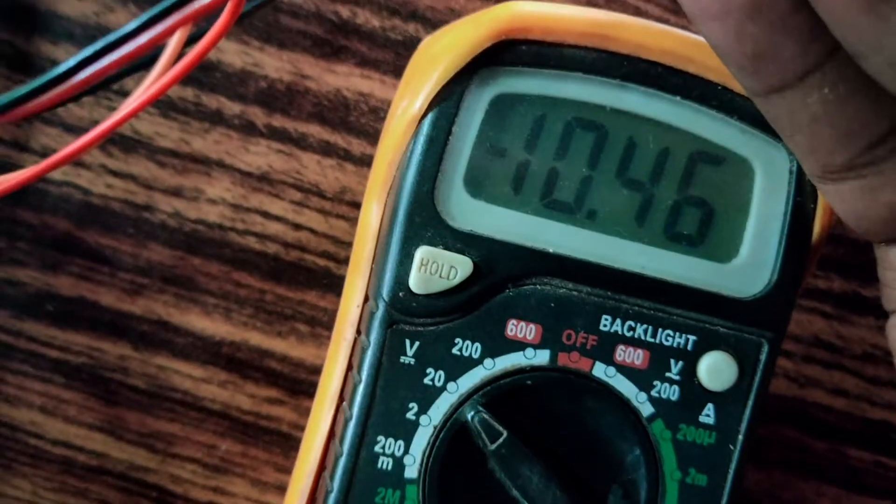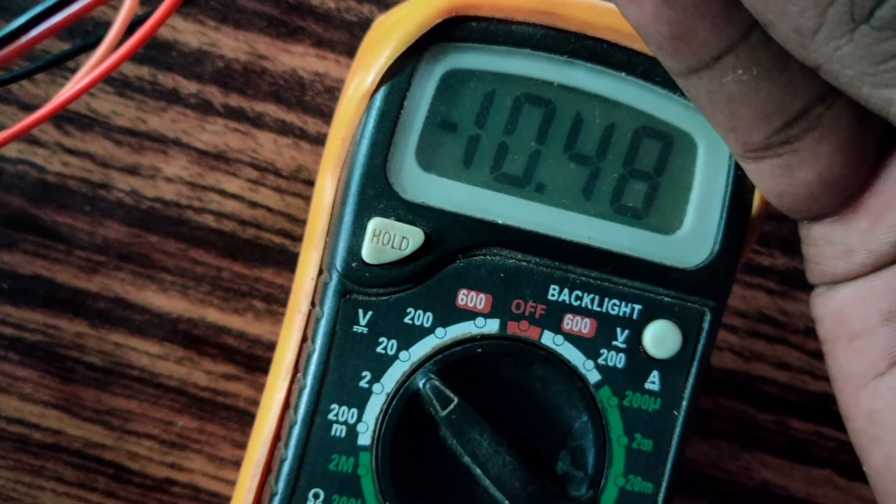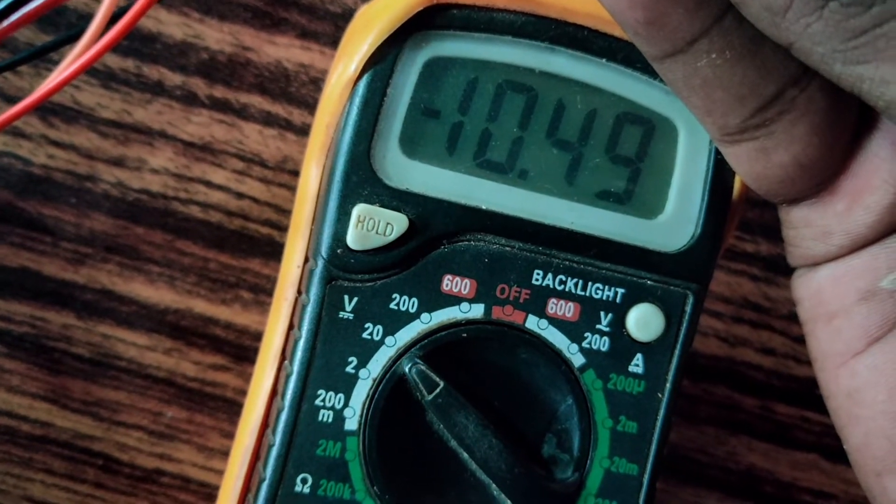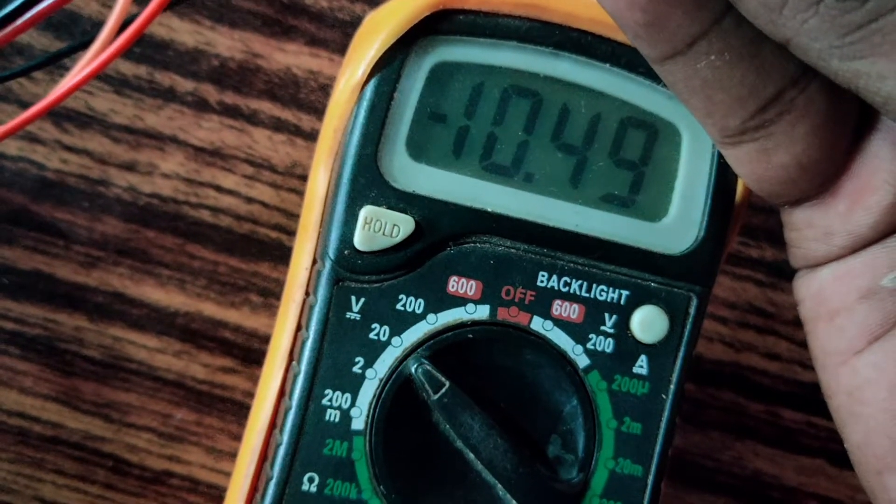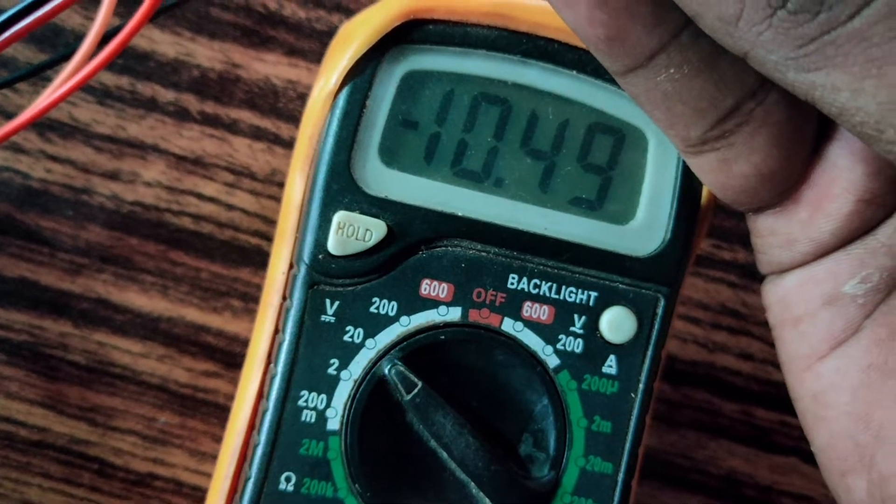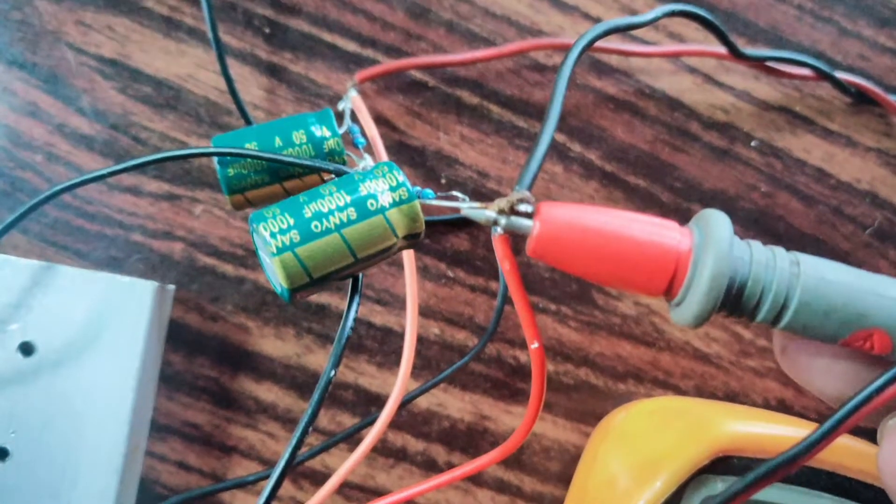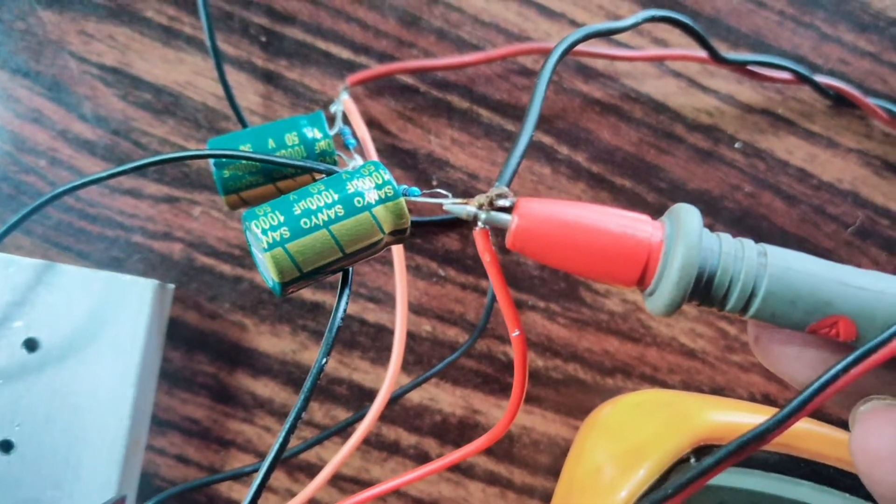It's working. Let's check the other rail. Yeah, it's also minus 10.46 something. Power supply is now plus or minus 10.46 volts. Yes, we made it.